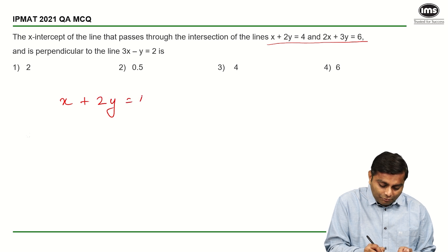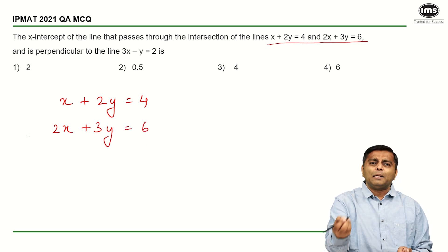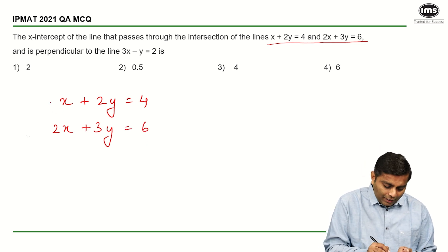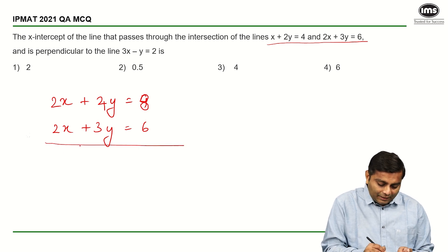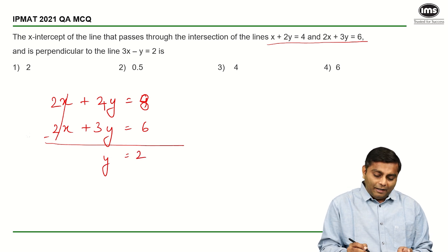So x plus 2y, they have given as 4. The other equation is 2x plus 3y is given to be 6. If I just multiply the first equation with 2, I am going to get 2x, 4y and 8. And now I quickly subtract. So this will cancel, 4y minus 3y is y, and 8 minus 6 is 2. So I get the value of y is 2.